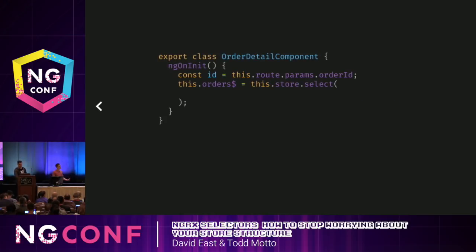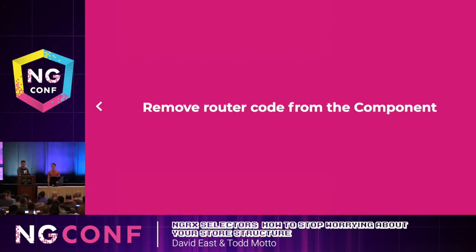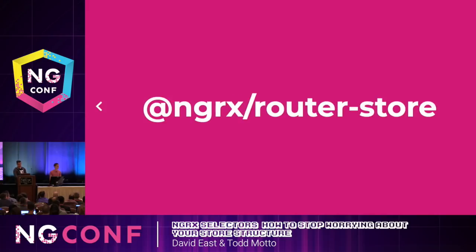You might think that in a component you'd go to your router, get your router state, extract that order ID, and pass it into the selector. This is really easy, but there is a problem — I don't want any routing code in my components. Routing code belongs in route guards or resolvers. But the great thing about NGRX is that you can actually use routing code with selectors.